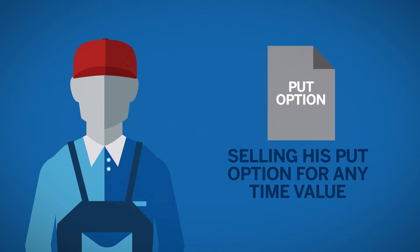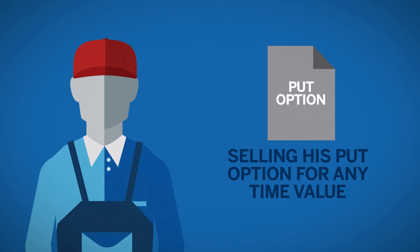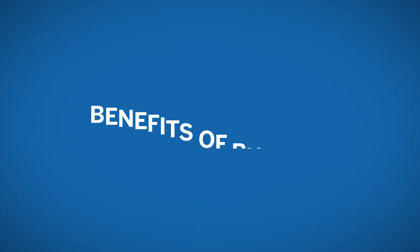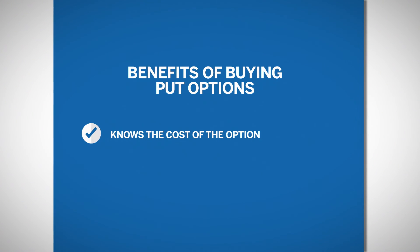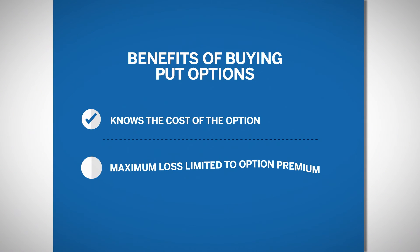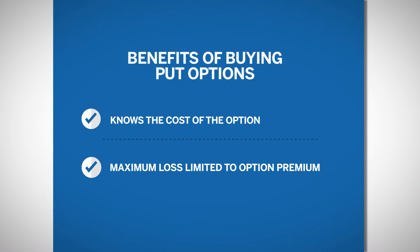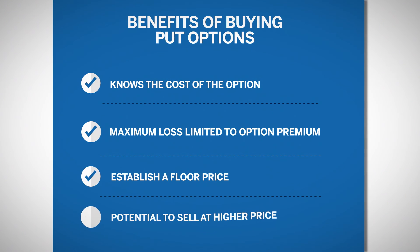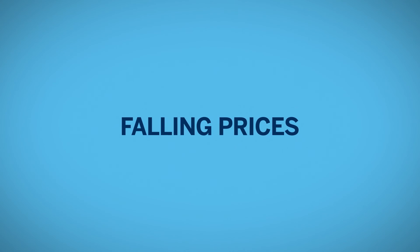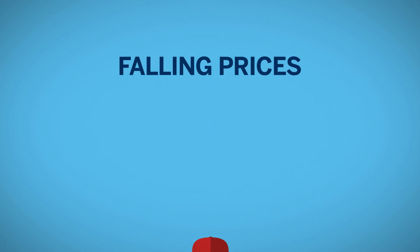Keep in mind that the farmer also has the possibility of selling his put option for any time value that it may still hold — whatever he receives would increase his net selling price even more. To summarize the benefits of buying put options for the short hedger: he knows the cost of the option and the maximum loss up front, which is the option premium; he is able to establish a floor price for his sales; and he still has the ability to take advantage of higher prices. No one can predict the future, but hedgers can take steps to manage it.